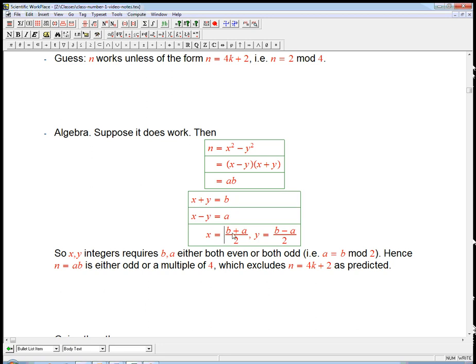You just add the two equations together and divide by 2 or subtract the two equations and divide by 2. Pretty easy algebra. This easiest system of equations, pretty much.